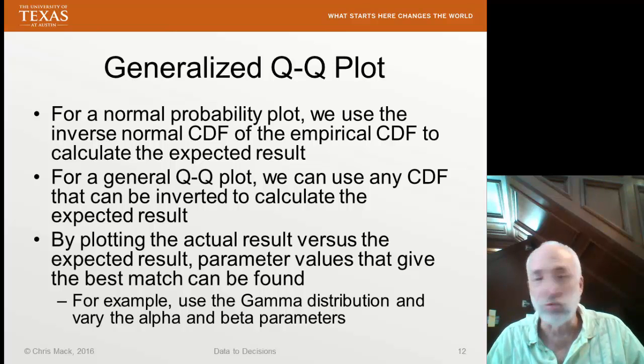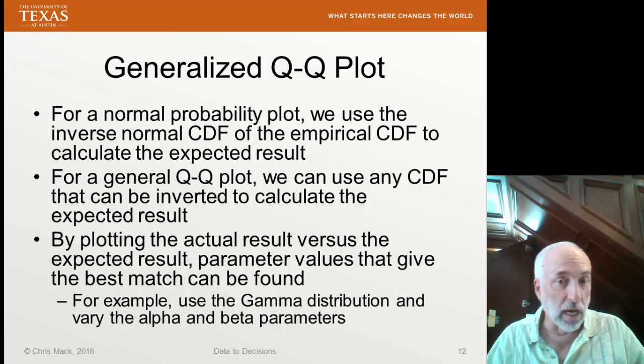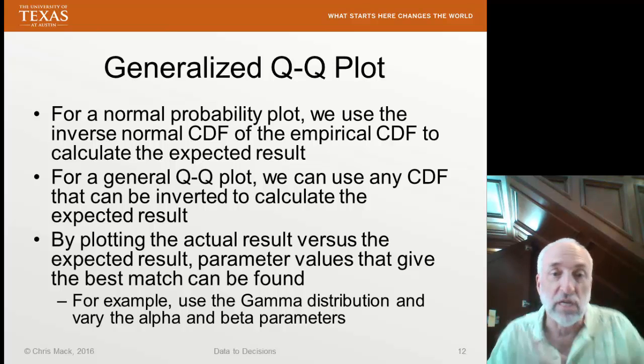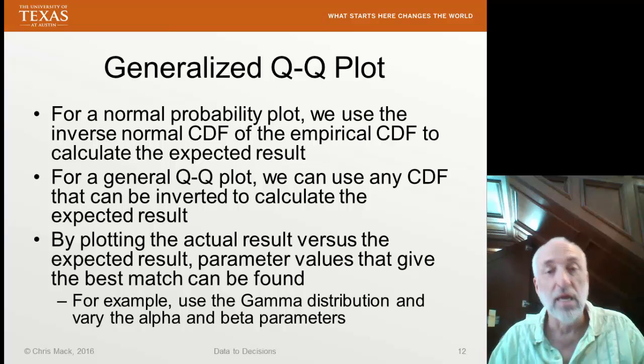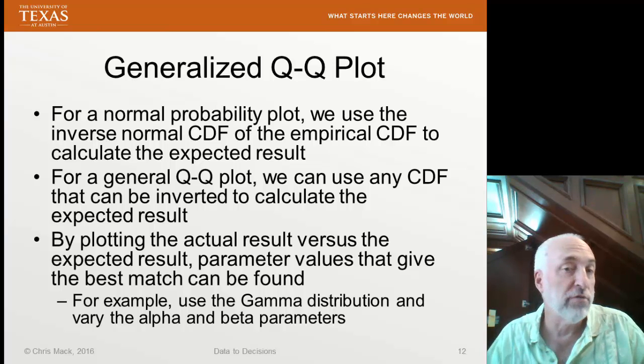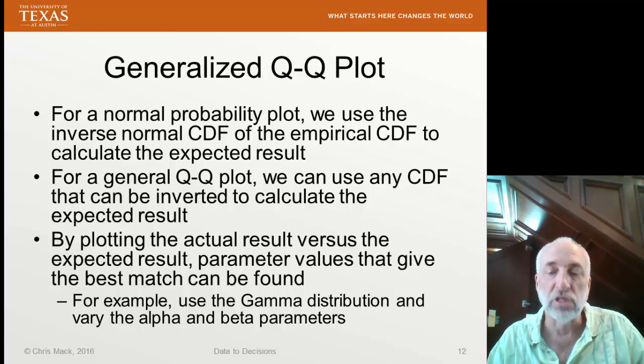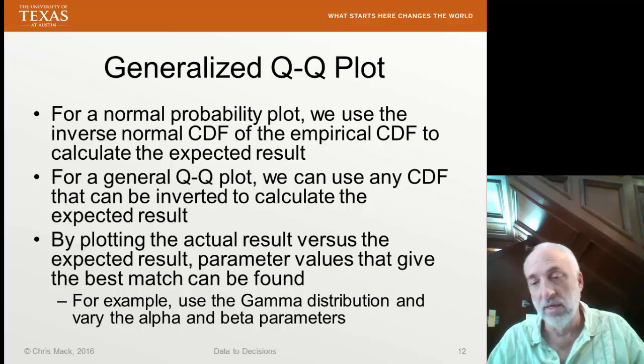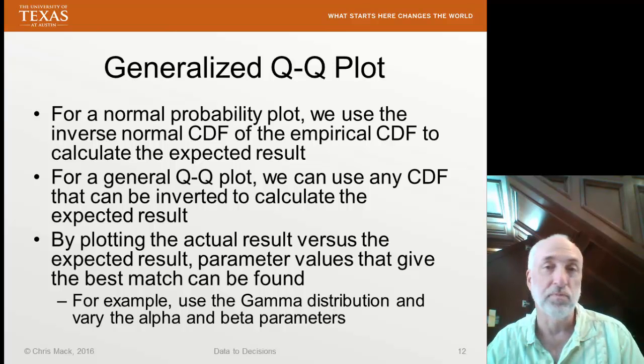We plot the actual result versus the expected result. If we have parameter values, we adjust those parameter values to see if we can get the straightest line and find out if a different distribution produces something closer to a straight line instead of a normal distribution.